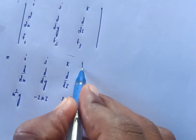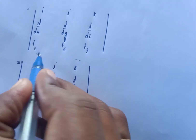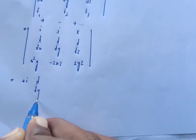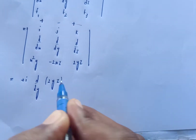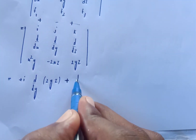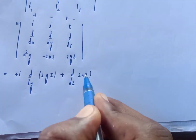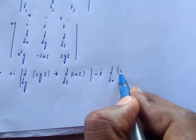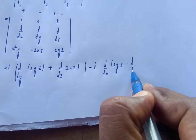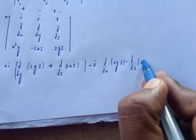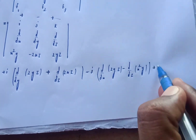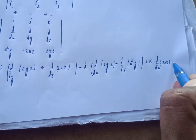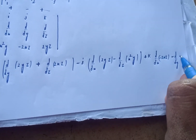Expanding the determinant using ad minus bc: plus i of (d by dy of 2yz minus d by dz of 2xz), minus j of (d by dx of 2yz minus d by dz of x squared y), plus k of (d by dx of minus 2xz minus d by dy of x squared y).